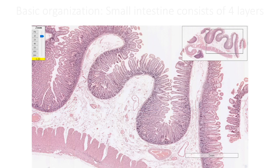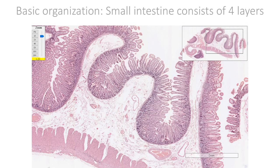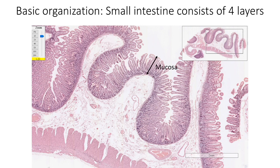Small intestine, like other parts of the digestive tract, is made of four layers in its wall. From the lumen outwards, the four layers are mucosa, submucosa, muscularis externa, and serosa.